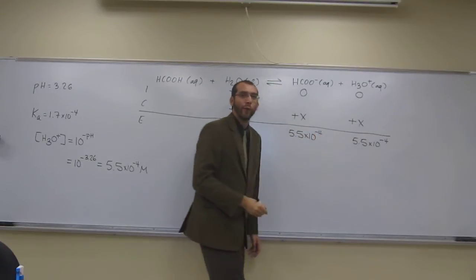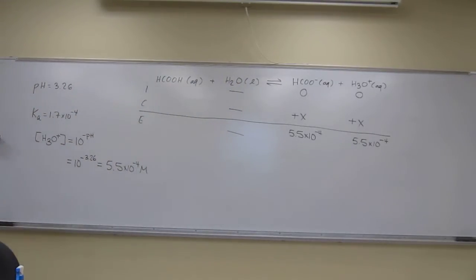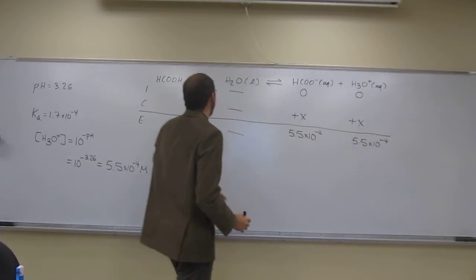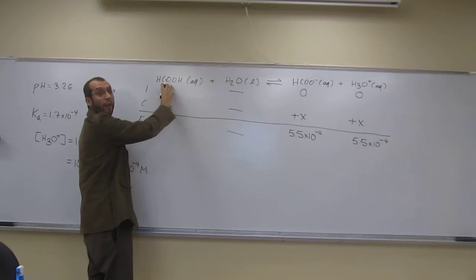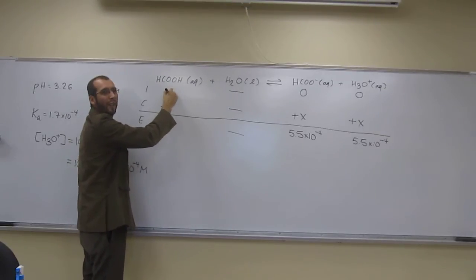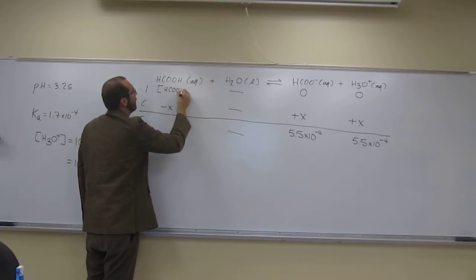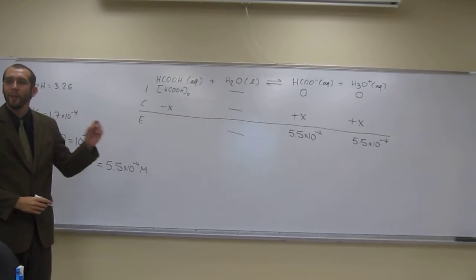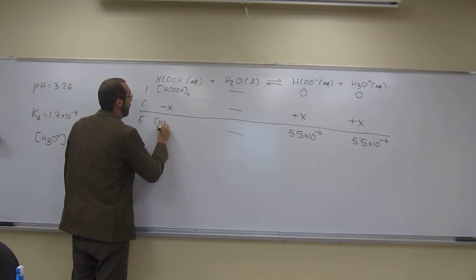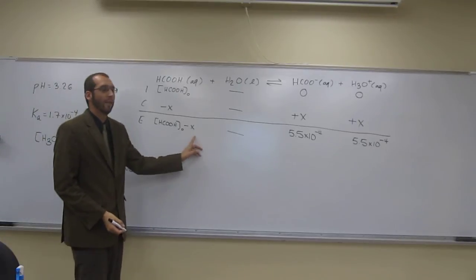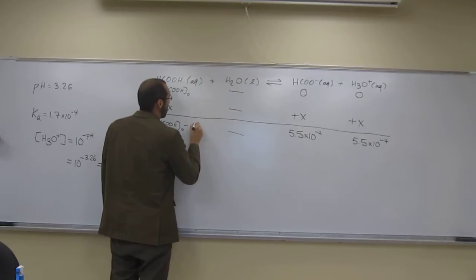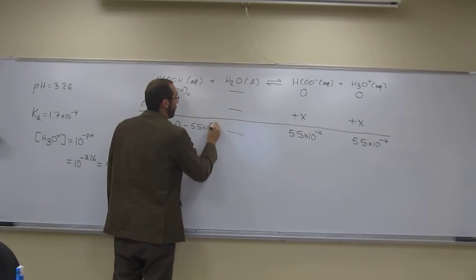It's kind of like detective work — every new clue tells you something. Since the products are plus x, the formic acid must be minus x at equilibrium. We're looking for that original concentration, so I'll call it HCOOH-original. The equilibrium concentration of formic acid is then HCOOH-original minus x, which is HCOOH-original minus 5.5 times 10 to the negative 4. We can set that whole equilibrium expression equal to y to plug it into the Ka equation.